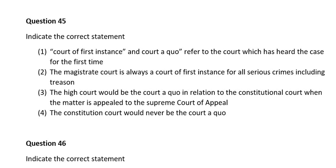Question forty-five. Indicate the correct statement. Number one, a court a quo refers to a court which has had the case for the first time; number two, the Magistrate Court is always a court of first instance for all serious crimes including treason; number three, the High Court would be the court a quo in relation to the Constitutional Court when the matter is appealed to the Supreme Court of Appeal; number four, the Constitutional Court would never be the court a quo. The correct answer is number four: the Constitutional Court will never be a court a quo.